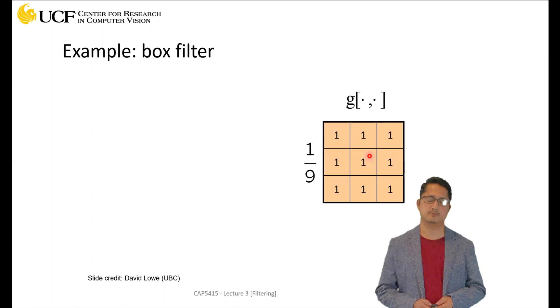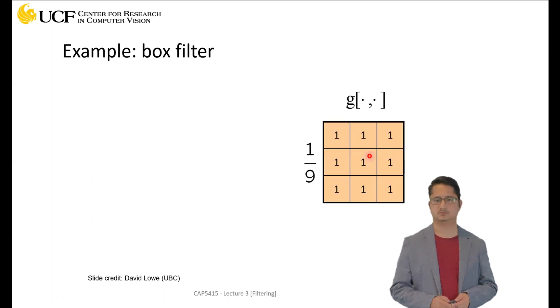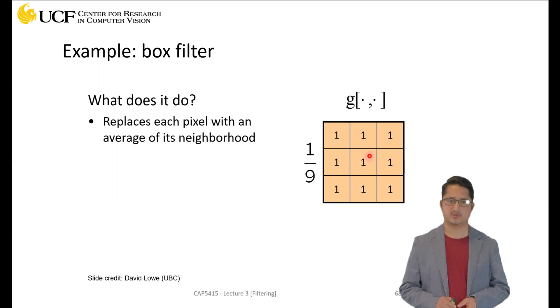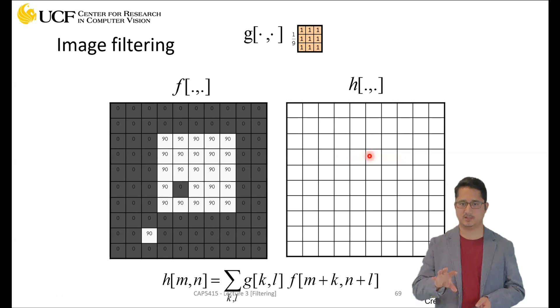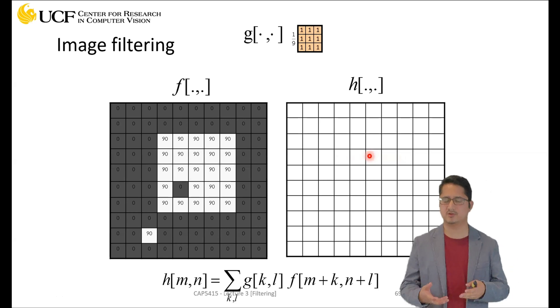Another interesting filter is the box filter, which we've seen earlier. What it does is replace each pixel location with the average of its neighborhood. Let's try to understand that on this example, because earlier we couldn't understand what really is happening.